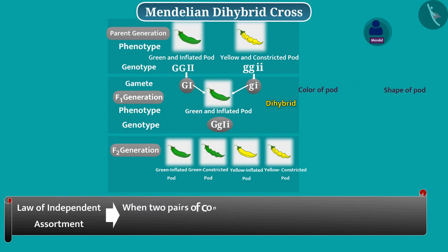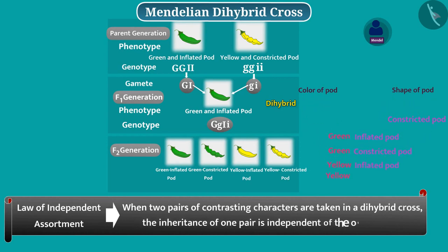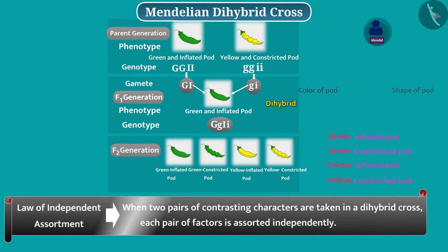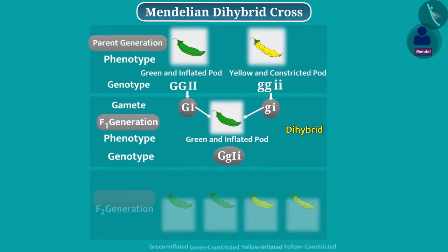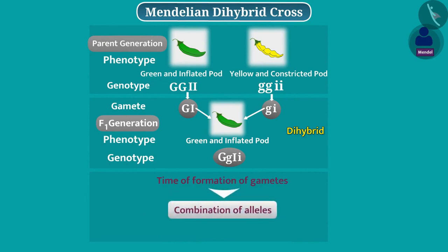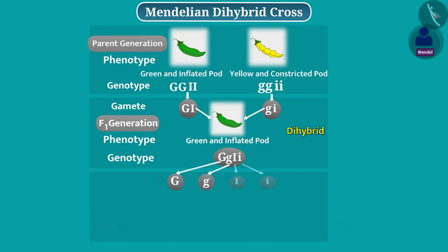According to the law of independent assortment, when two pairs of contrasting characters are taken in a dihybrid cross, the inheritance of one pair is independent of the other. In other words, each pair of factors is assorted independently. The genotype of the dihybrid plant has alleles of two characters. At the time of formation of gametes, the combination of alleles will occur such that each gamete will receive only one allele for each character. Since alleles of two characters are present, these will be assorted independently and four types of gametes will be formed.